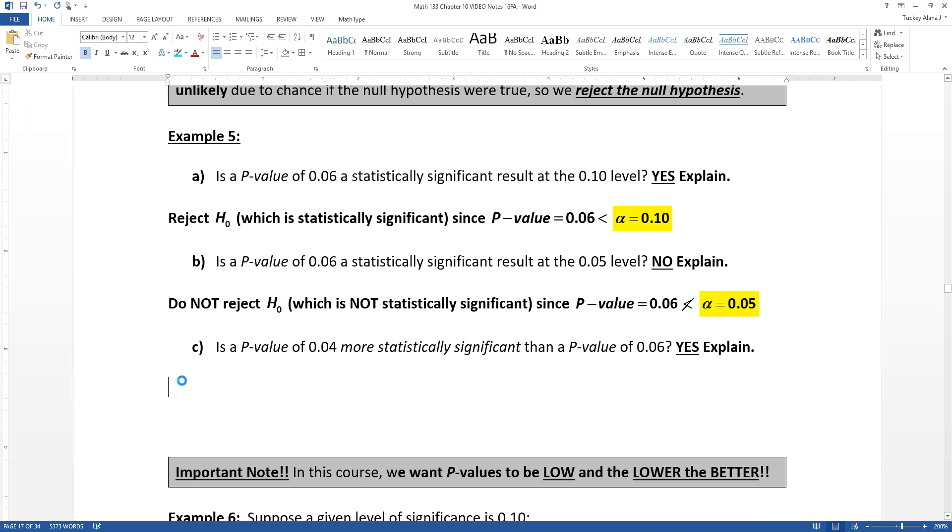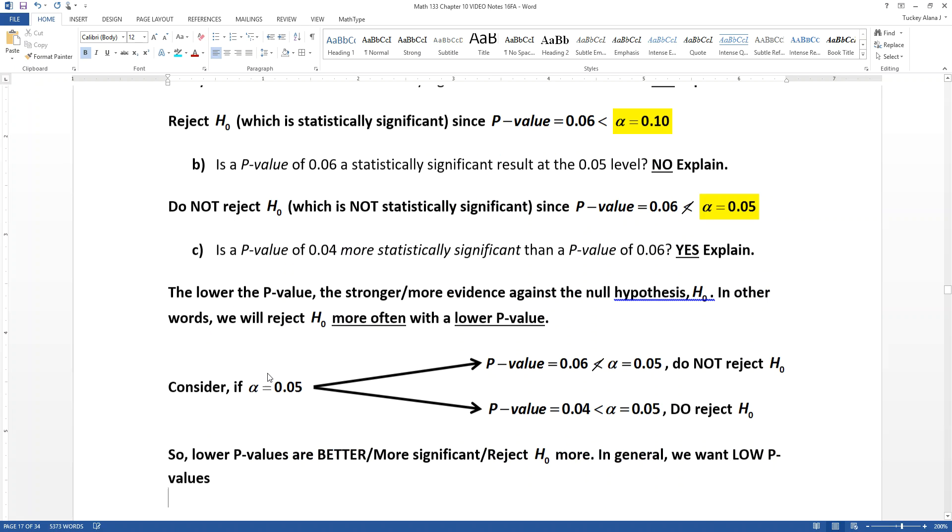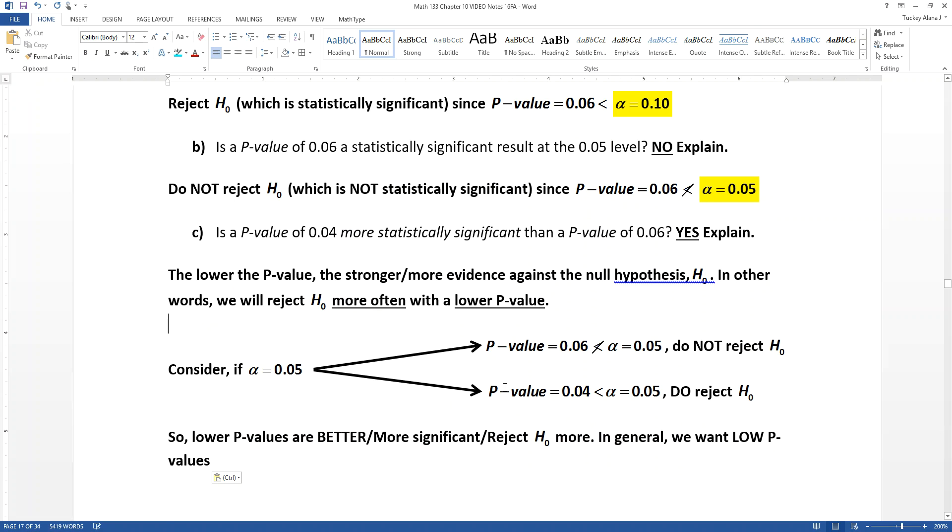So consider if alpha had been 0.05. If alpha was 0.05, you would get to reject the null hypothesis with 0.04, but not with 0.06. That means that 0.04 is a more powerful p-value. The lower the p-value, the better. That is what you want.